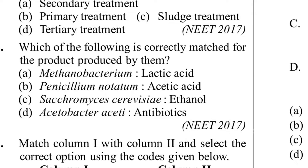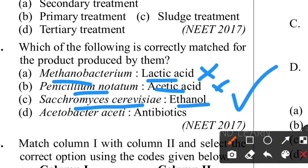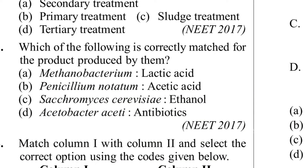Third question: which of the following is correctly matched for the product produced? Methanobacterium - lactic acid is wrong because Methanobacterium produces methane gas. Penicillin notatum - azaric acid is wrong; it gives penicillin. Saccharomyces cerevisiae - ethanol is correct; it produces ethanol by fermentation. Option D - Azotobacter aceti produces acetic acid, not antibiotics. So option C is the correct answer.